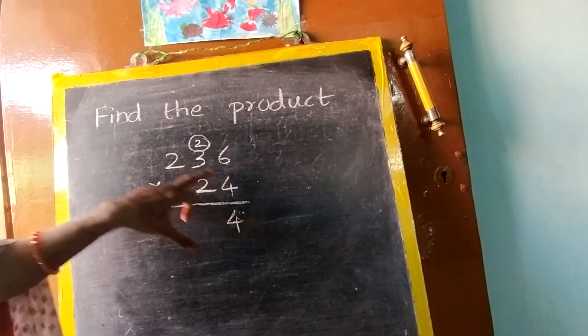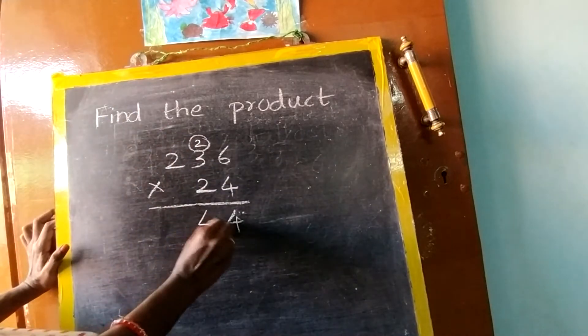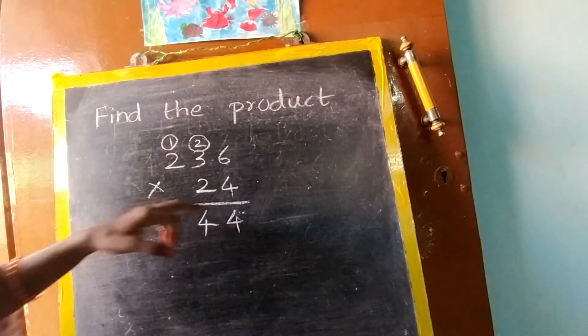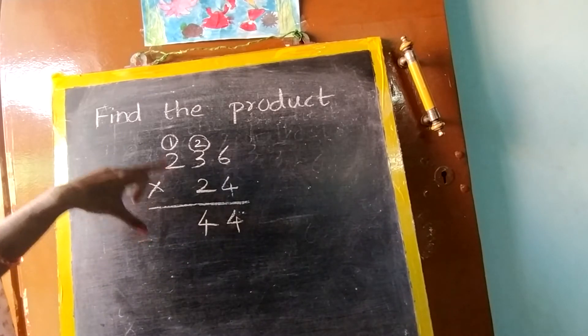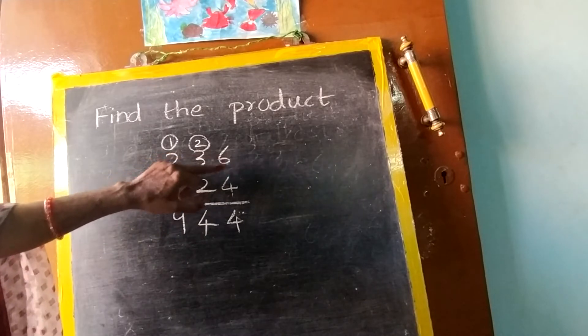Now 4, 3's are 12. 12 plus 2, 14. Again 4 here, 1 carry down. Next 4, 2's are 8. 8 plus 1, 9. So first thing, we will go with 1's, 1's, 1's.